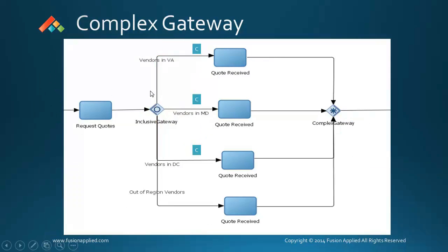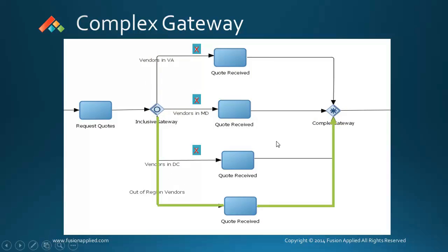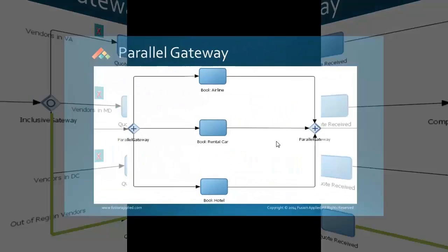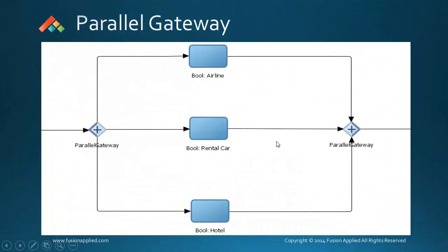Just like an inclusive gateway, if none of the outgoing sequence flow expressions evaluate to true, the token will follow a default path. Let's look at parallel gateways now.